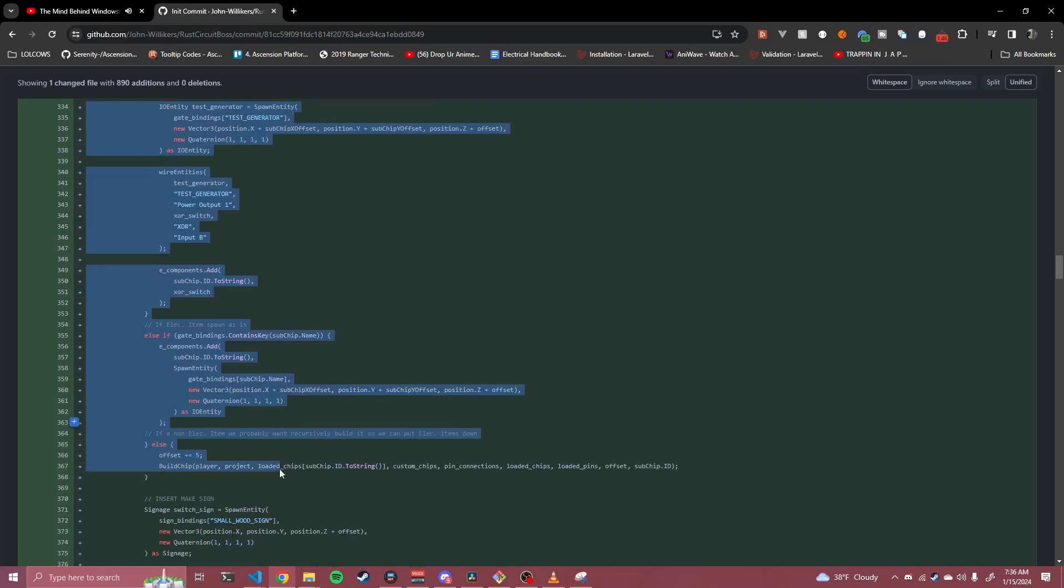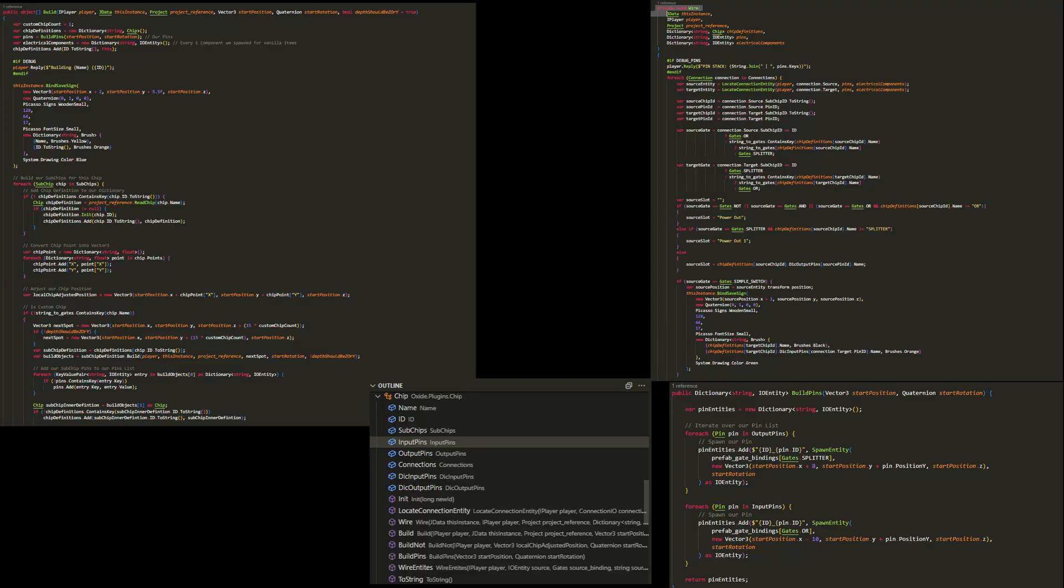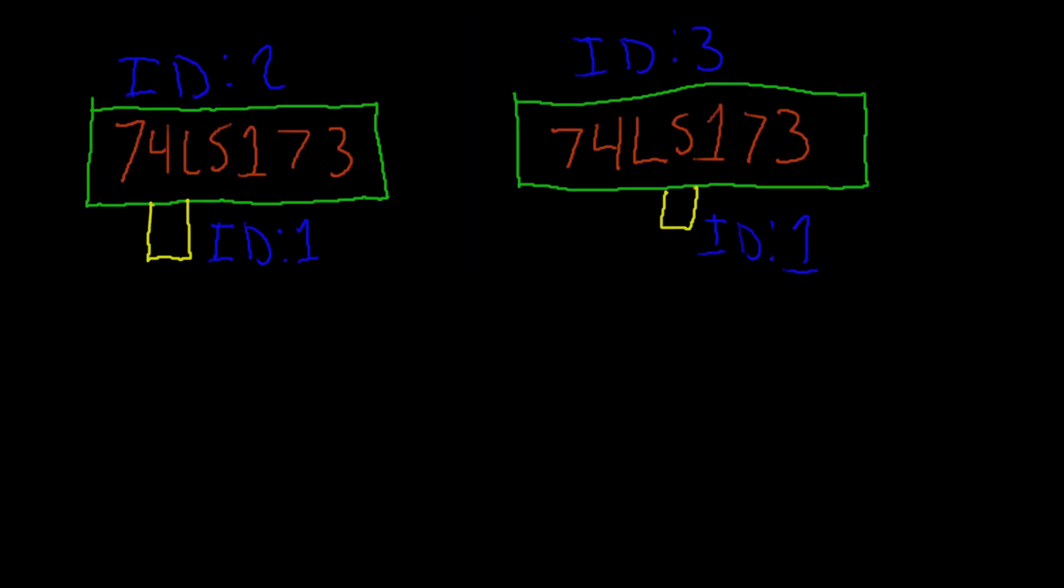Once that was done, I split the build logic up. Pins, building chips, and wiring were their own methods on the actual chip class, which made it easier to debug the code as well as make changes to those processes.